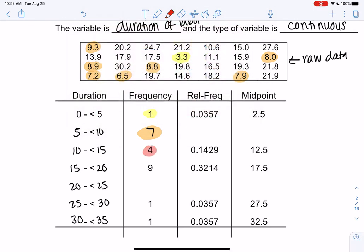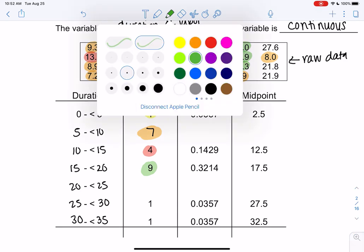Four for ten through fifteen. Let's check that out: 10.6, 11.1. I like to highlight them because it helps me make sure I get them all. So 14.6, fifteen will not be included, fifteen goes in the next group. The next one, fifteen through twenty: 15.9, 16.5, 18.2, 19.3, 19.8. Just go in whatever order you see them. You should get nine of them.